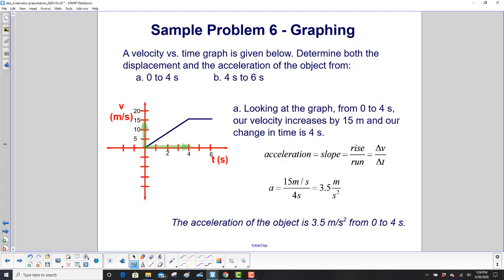Let's find the acceleration of the object between 0 and 4. So we need to find the slope of this line here. So the slope is rise over run or the change in velocity over time. Either way, you can write that.